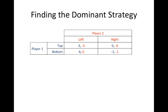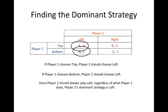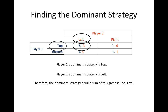If we examine this game from player 2's perspective, if player 1 chooses top, then player 2 should choose left, since losing 3 is better than losing 6. If player 1 chooses bottom, then player 2 should still choose left, since losing nothing is preferable to losing 1. Since player 2 should always play left, regardless of what player 1 does, player 2's dominant strategy is to play left. Since both players in this game have a dominant strategy, the dominant strategy equilibrium of this game is top left.